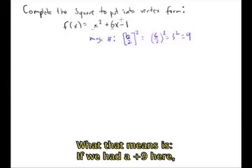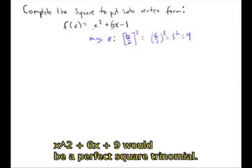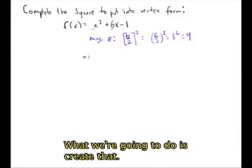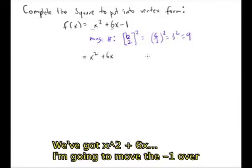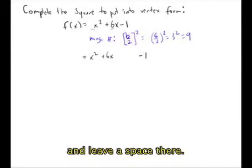Now what that means is if we had a plus 9 here, x squared plus 6x plus 9 would be a perfect square trinomial. So what we're going to do is create that. We've got x squared plus 6x. I'm going to move the minus 1 over and just leave a space in there. And then I'm going to put what I need, plus 9.